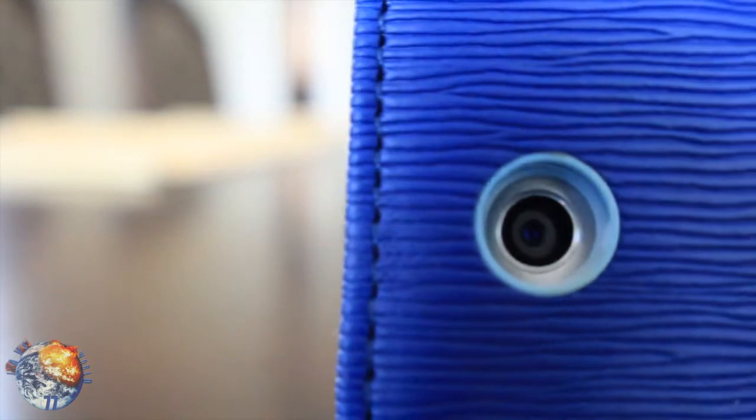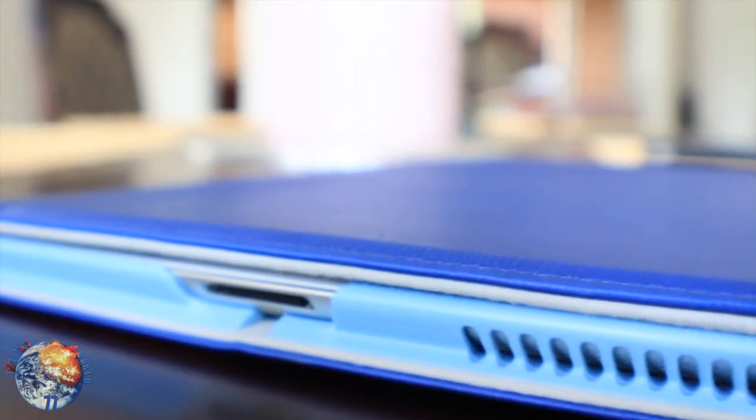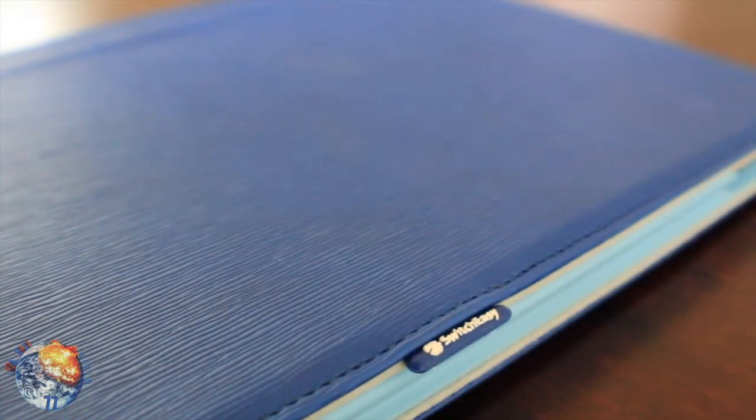On the back, you have a nice precise cutout for your camera. On the bottom, you have a cutout for your speaker grill and your 30 pin dock connector. Then you also have the nice SwitchEasy tag right there on the side.